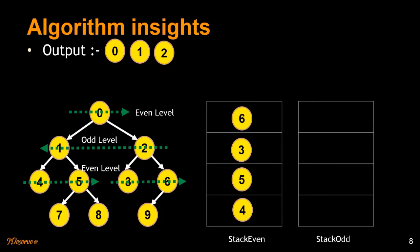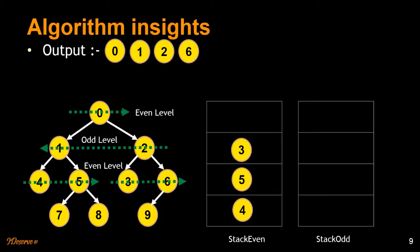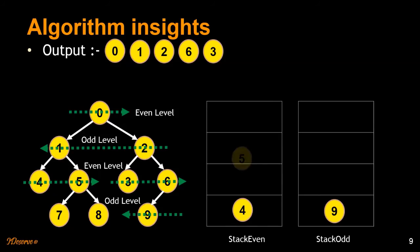Now since the odd stack is empty, we start popping elements from the even stack. We pop out six first and print it out. Six has one child — nine — and since it is at the odd level, we push nine onto the odd stack. Then we pop out three and print it out. Since three has no children, we pop out five and print it out. Five has two children — seven and eight — and since we are at the odd level, we traverse from right to left and push eight and seven onto the odd stack.